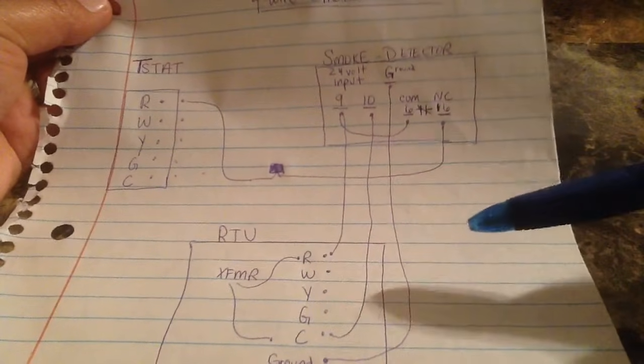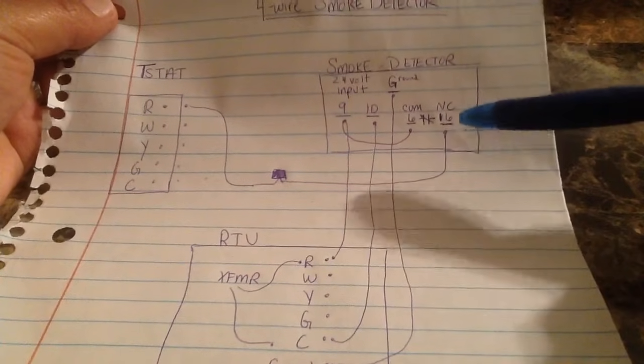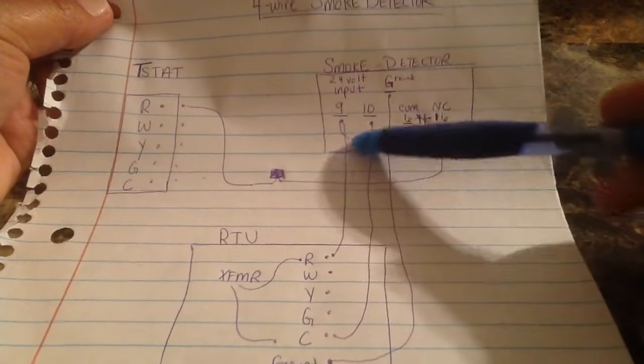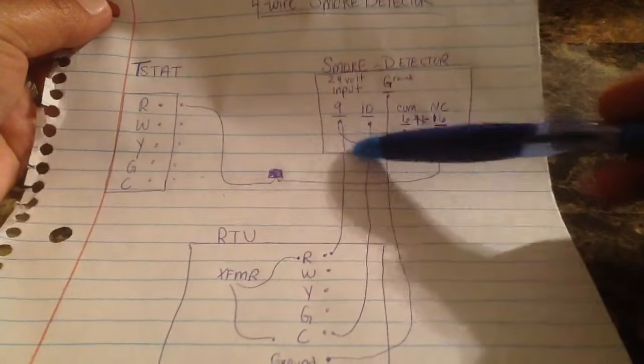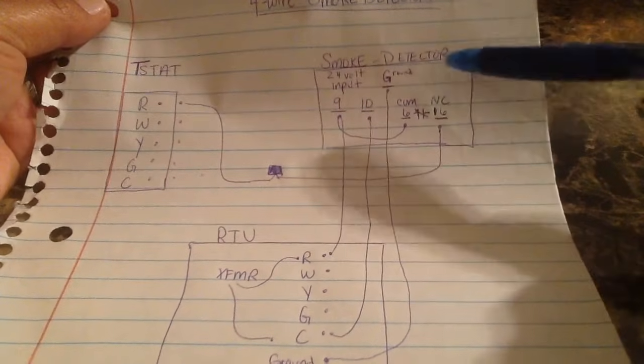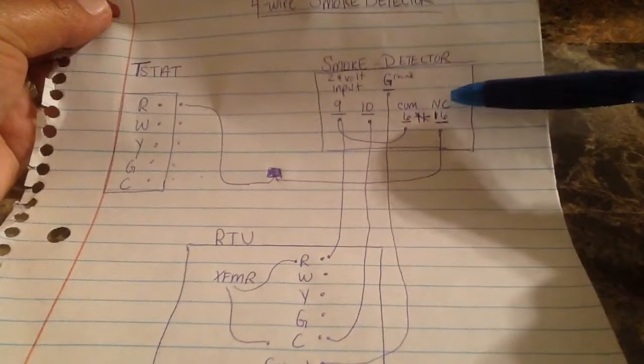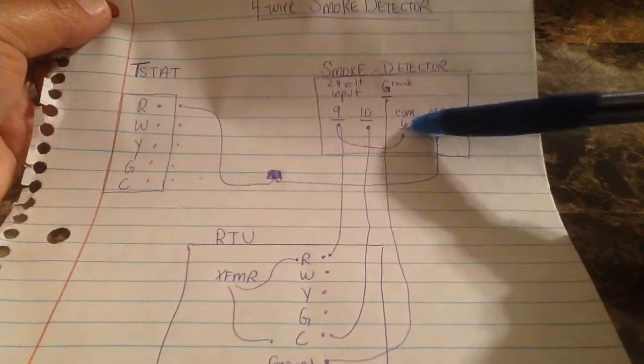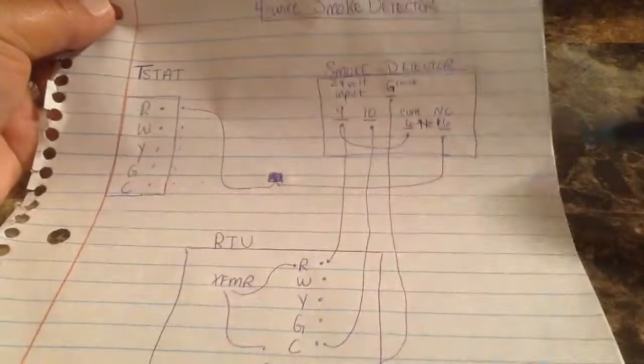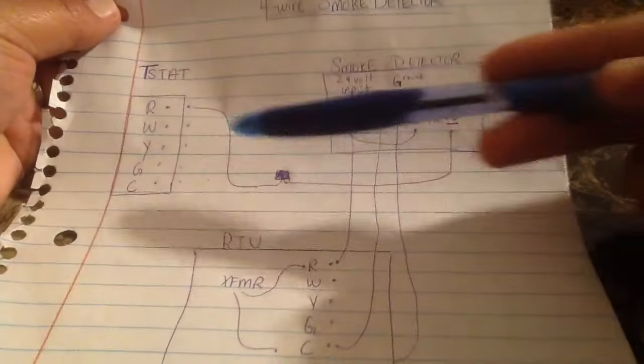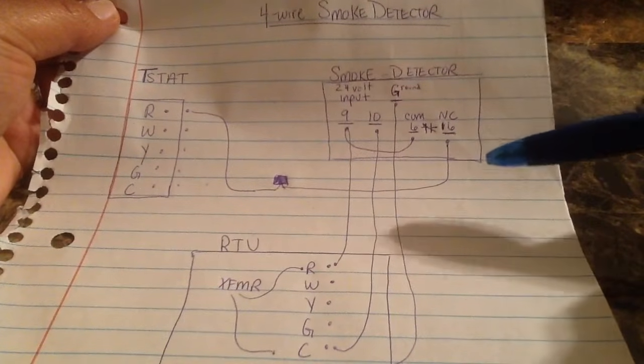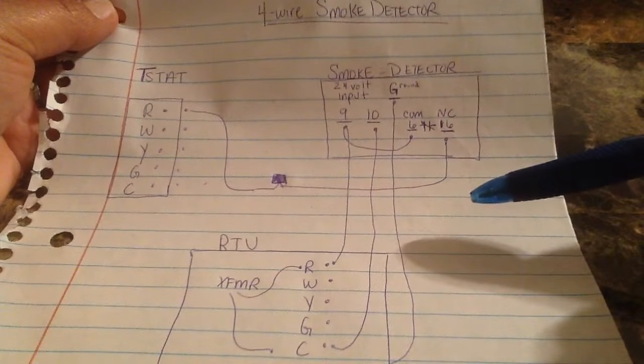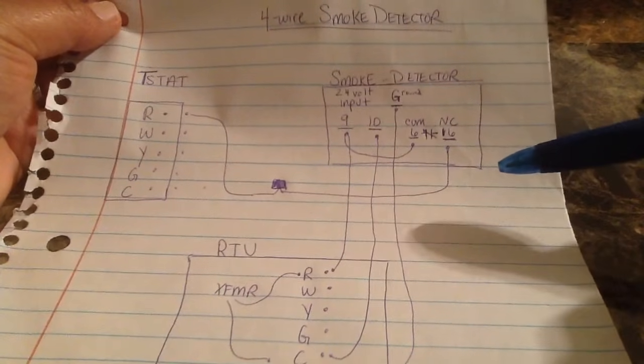So in a situation where there is smoke and the unit needs to shut down, 24 volts comes from the transformer powering up nine and ten, 24 volts comes to six, and this opens up because the smoke detector is now in an alarm state. And this interrupts 24 volt power passing to the thermostat. So thermostat's calling for cooling or heating or fan operation, it's not going to get any juice going over there. So just an easy simplified version of it.